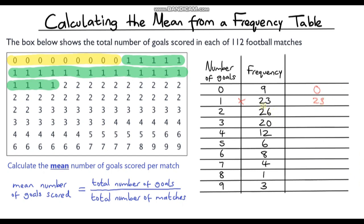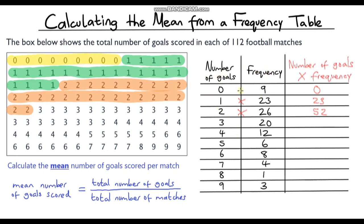For the next category, there were 26 matches in which two goals were scored. Instead of adding up all those twos, we use multiplication: 26 times two gives me 52. This column is just the number of goals multiplied by the frequency. Continuing: zero times nine is zero; 20 times three is 60; four times 12 is 48; five times six is 30; six times eight is 48; seven times four is 28; eight times one is eight; and nine times three is 27.